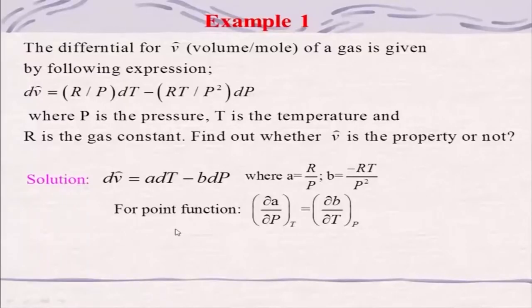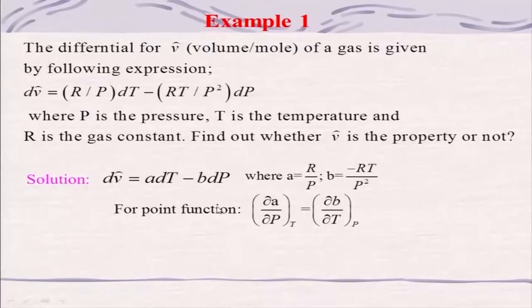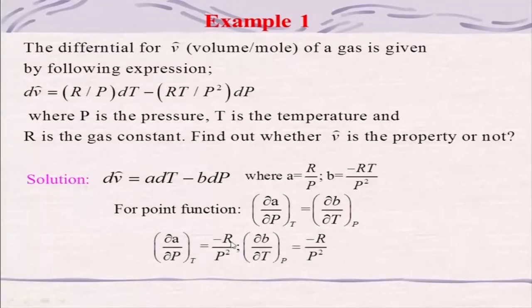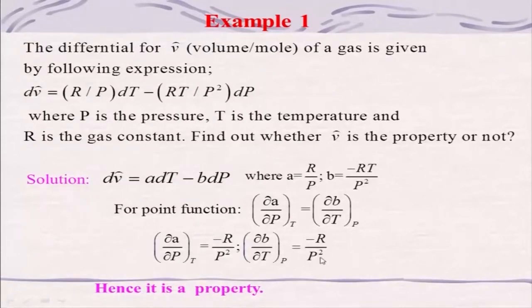We check whether it is a point function by verifying: ∂A/∂P at constant T equals ∂B/∂T at constant P. Differentiating A = R/P with respect to P gives −R/P². Differentiating B = −RT/P² with respect to T gives −R/P². Since this condition is satisfied, it is a property. By this one can ascertain whether a variable is a property or not.